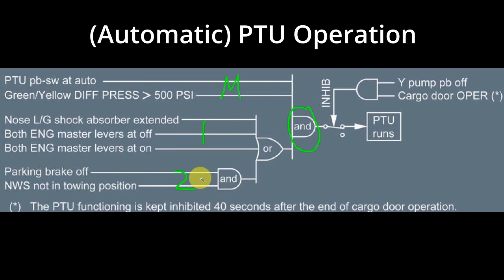In flight, it's nice and easy. The master conditions would be met, the PTU pushbutton would be in auto, and as long as there's a difference of pressure of more than 500 PSI the PTU would run. This is because in Set 1, the nose landing gear shock absorber would be extended. And even if Set 1 is not satisfied, both conditions of Set 2 would be satisfied in flight — the parking brake would be off and the nose wheel steering would not be in the tow position.